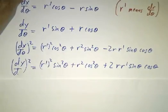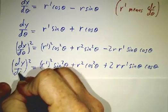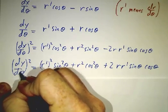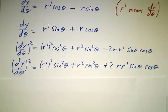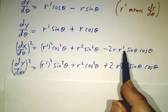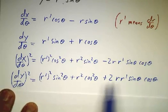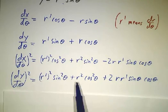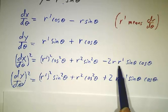And then we square those. dx dθ squared gives you the product of three terms, dy dθ squared gives you a product of three terms. And you notice that the cross term exactly cancels.